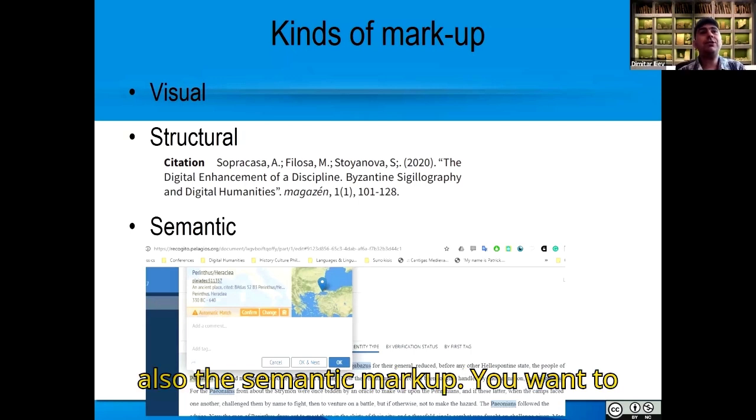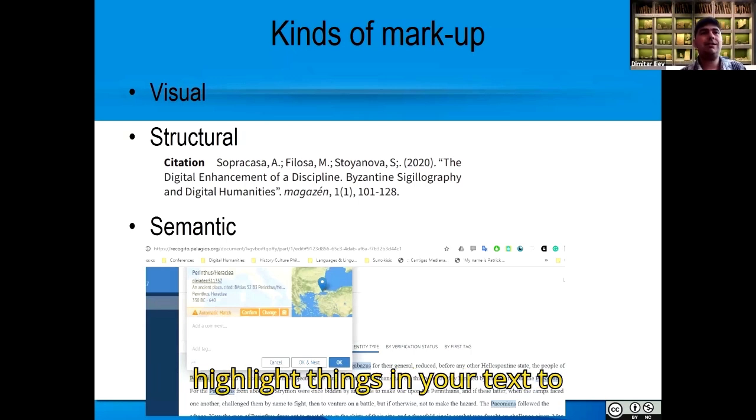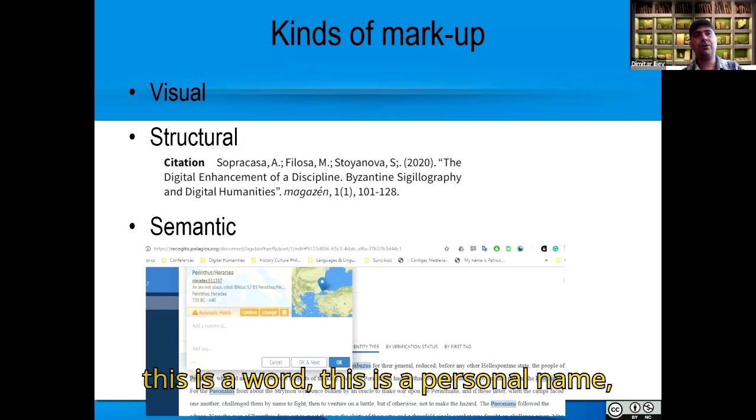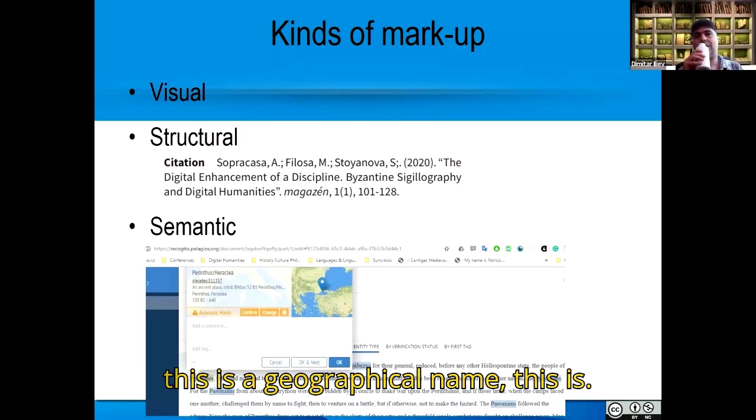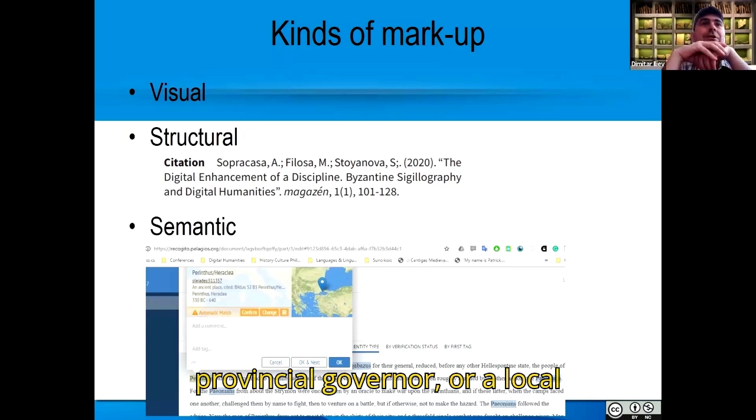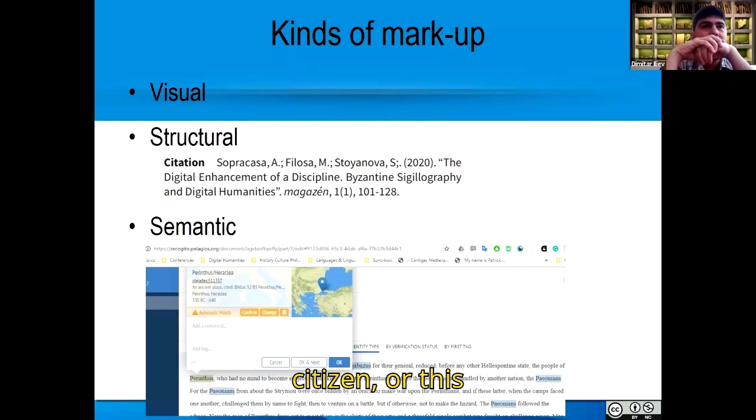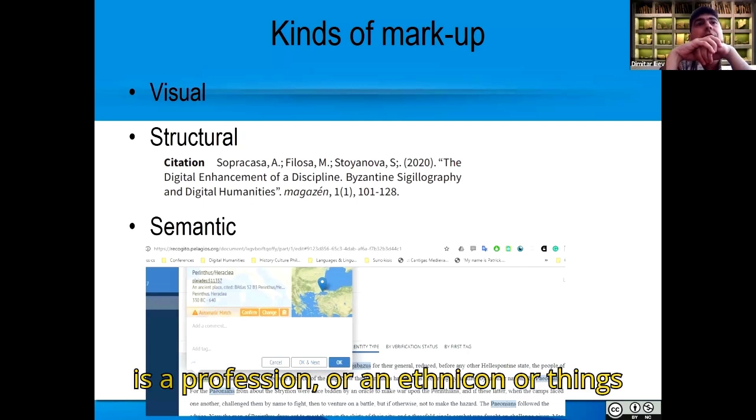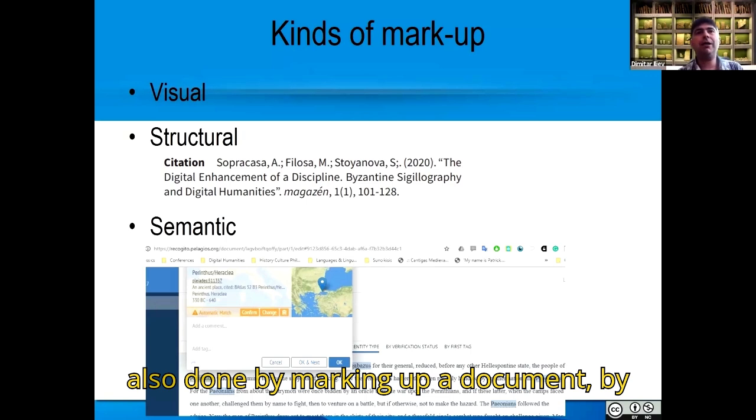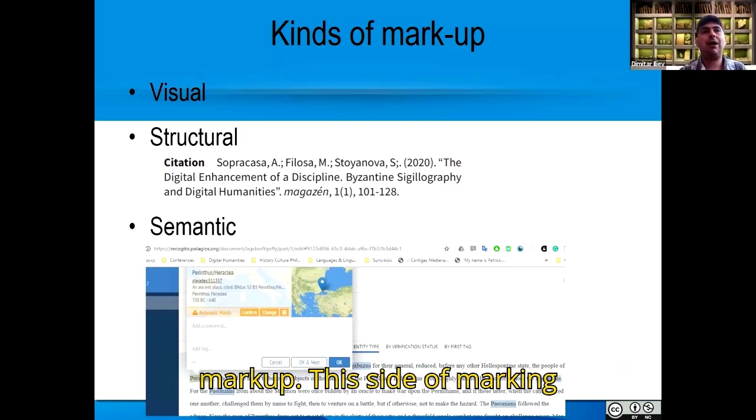And there's also the semantic markup. You want to highlight things in your text to indicate what they are. For example, this is a word, this is a personal name, this is a geographical name, this is, for example, an official of the Roman Empire, or a provincial governor, or a local citizen, or this is a profession, or an ethnicon, or things like that. This can be also done by marking up a document, by annotating a document, and this kind of markup can be called a semantic markup.